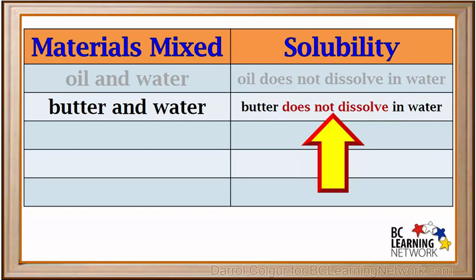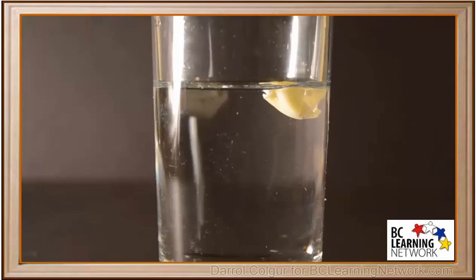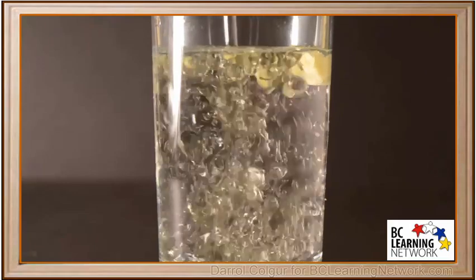Butter is sort of an oily material. We have seen so far that oily materials do not like to dissolve in water. Now we'll add some oil to the mixture and see what happens with the butter and the oil. Can you make a prediction of what will happen? We pour some oil in and it rises to the top.